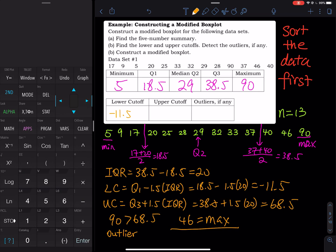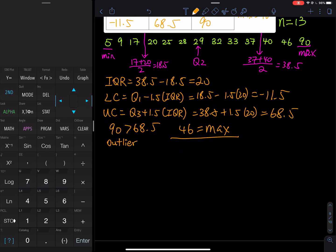So the lower cutoff, negative 11.5. Upper cutoff, 68.5. And then we have an outlier, 90. And then I also need to make a note for myself. Since now outlier is no longer the maximum, the maximum is the second highest entry. Now it's 46. And then you construct your modified boxplot. So here is the modified boxplot. So first we draw 5, so this is 5. And then the Q1 is 18.5, so this is 18.5. And then Q2 is 29. And then Q3 is 38.5. And then the maximum is 46, which is like right here, 46. And then the box stands for the middle 50%, the interquartile range IQR. And then the outlier, the 90, I will just use a big star to represent 90.